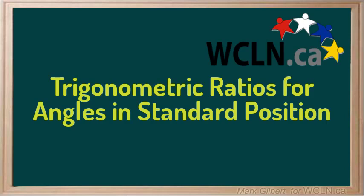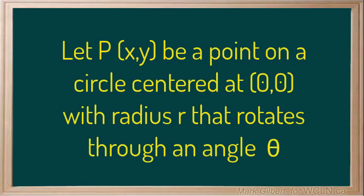Trigonometric ratios for angles in standard position. Let P(x,y) be a point on a circle centered at (0,0) with radius r that rotates through an angle theta.